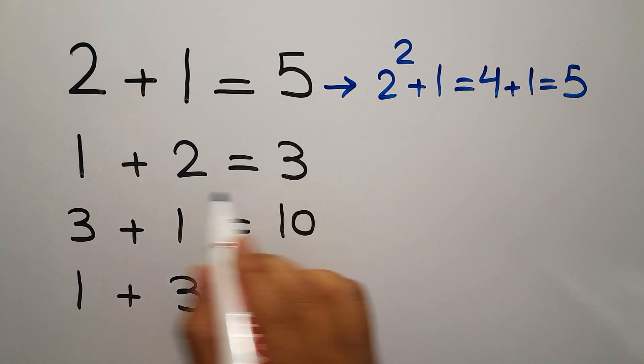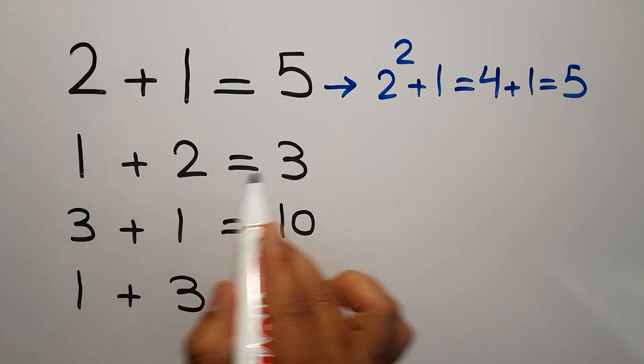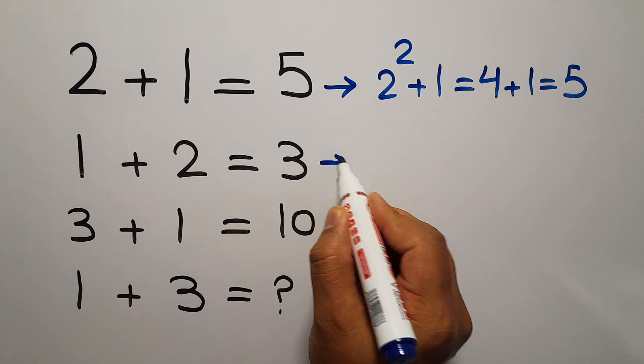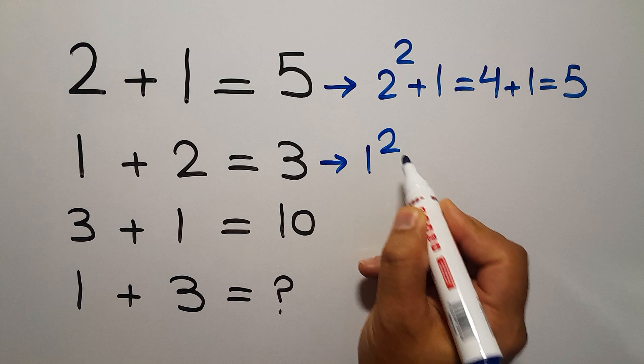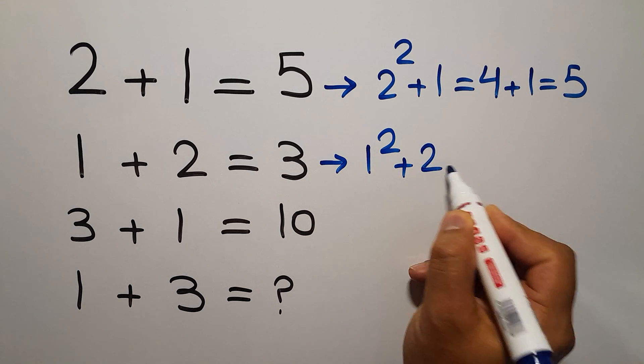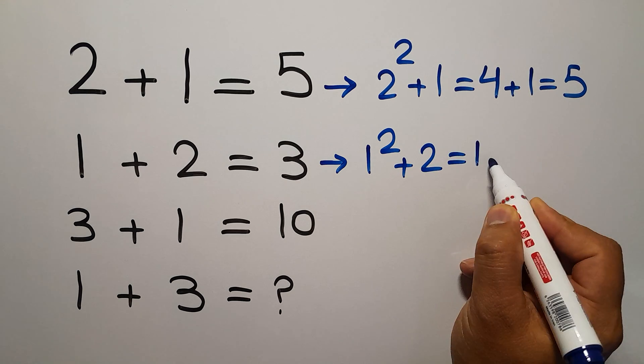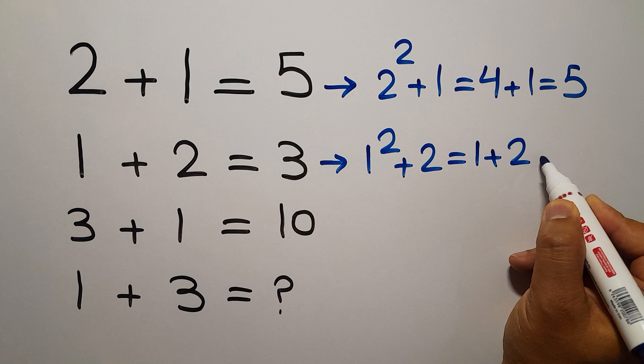In the second line we have 1, 2, and 3. 1 square plus 2 equals 1 plus 2, and this is equal to 3, the right hand side number.